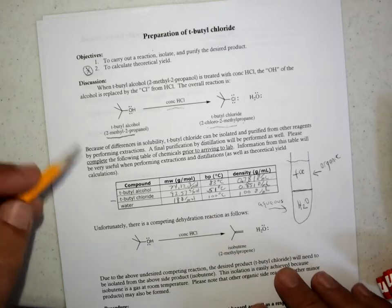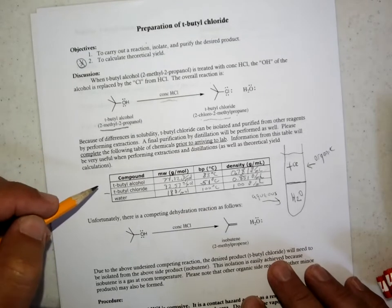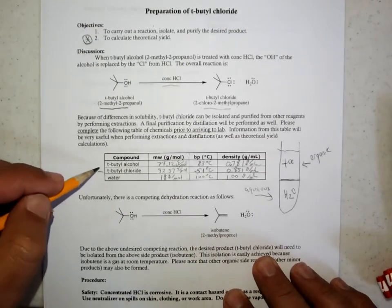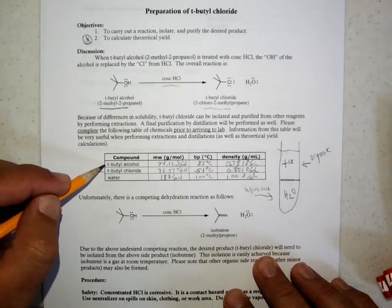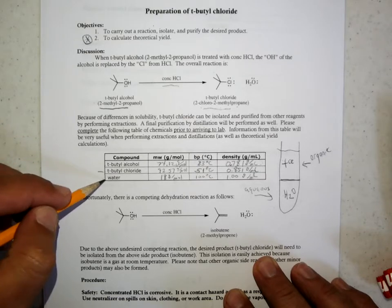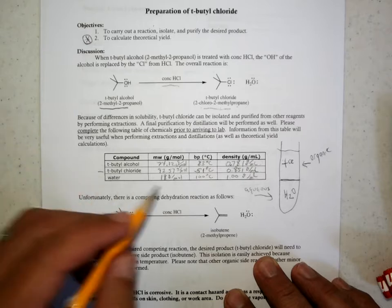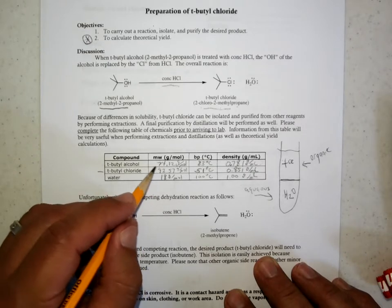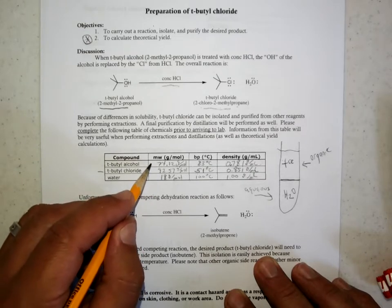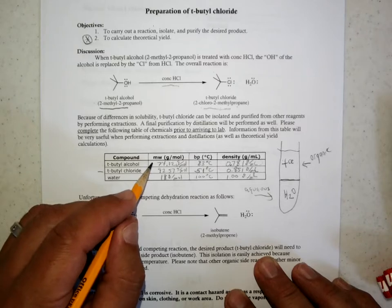Now, prior to arriving to lab, if you're going to do this in the lab, you would gather some data on t-butyl alcohol, t-butyl chloride, and water for comparison. T-butyl alcohol molecular weight is very important in calculating the yield you'd expect from this reaction.